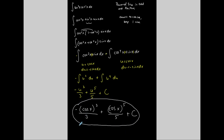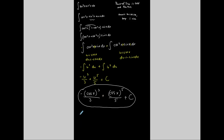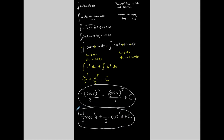This can also be written as negative one-third times cosine cubed x plus one-fifth times cosine to the fifth x plus C — both forms are correct. The key is that I needed sine to have an odd exponent so I could use Pythagorean identities to convert to cosine and keep that one extra sine for u-substitution at the end.